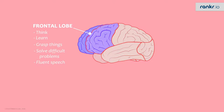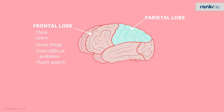Next, we come to the parietal lobe. It plays a very important role and has to be able to process sensory information within seconds. This lobe senses touch, pressure, and pain, and it also helps in movement and control of the five senses.